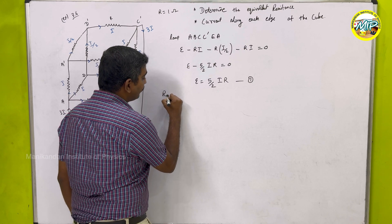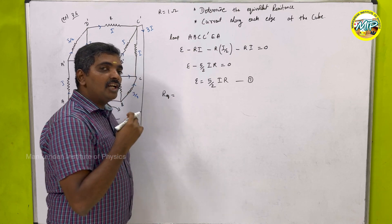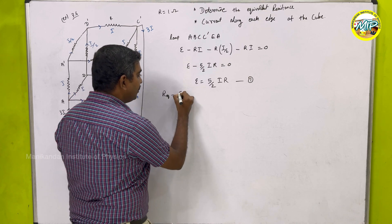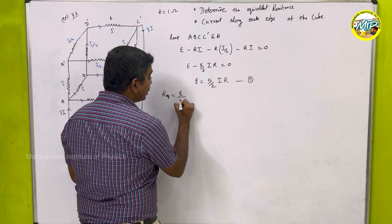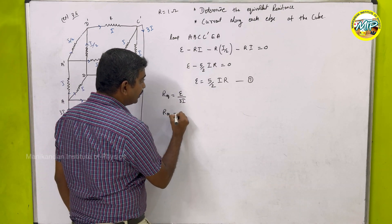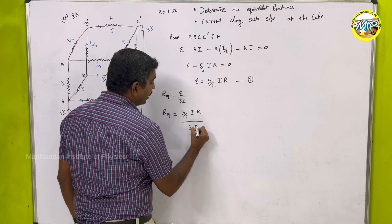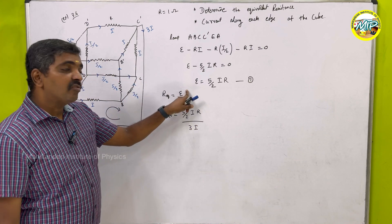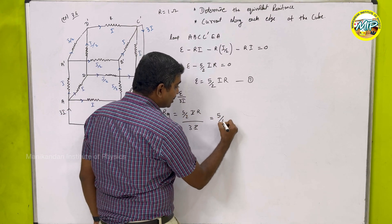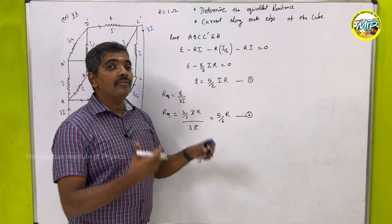Now I can write the equivalent resistance. From Ohm's law, V equals IR, so R_equivalent equals V divided by total current, which is E divided by 3I. Substituting E equals 5/2 IR: R_equivalent equals (5/2 × IR) divided by 3I. The I cancels, giving R_equivalent equals 5/6 times R. This is the equivalent resistance of the cube network — a result we could not get from simple series and parallel combinations.